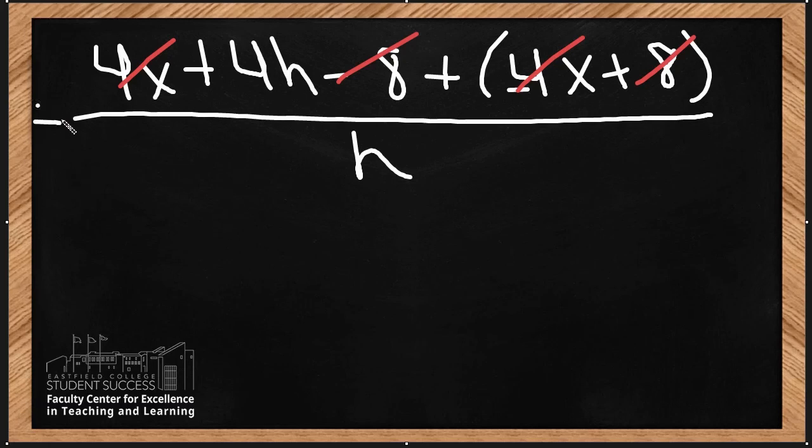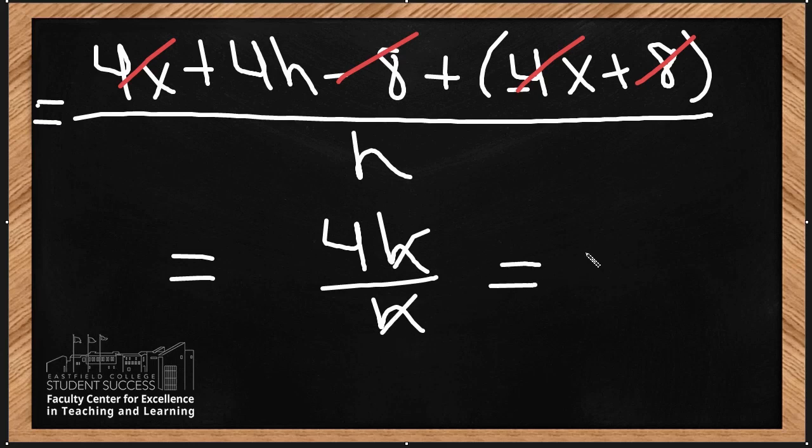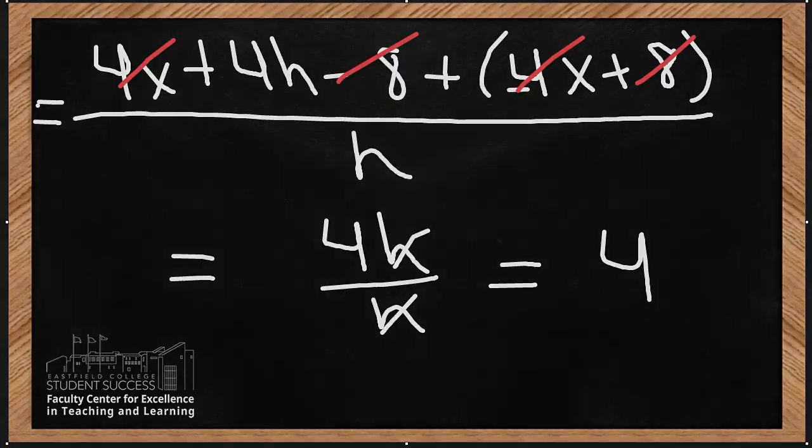And I'm left with 4h over h. And simplifying these h's will also just give me a solution of 4. And that is the difference quotient.